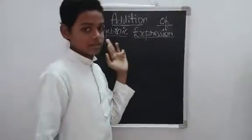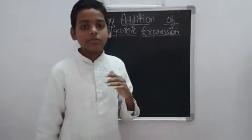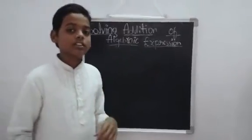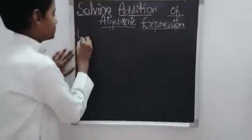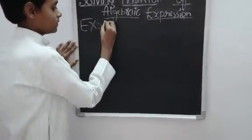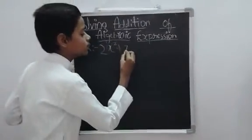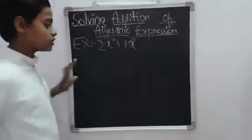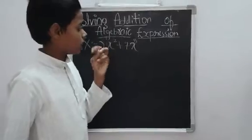When we are solving addition of algebraic expression, we need only like terms, not unlike terms, because the variables and exponents are different. So let's see an unlike example: 2x squared plus 7x. They both are unlike terms and their exponents are different.